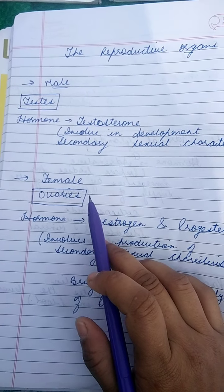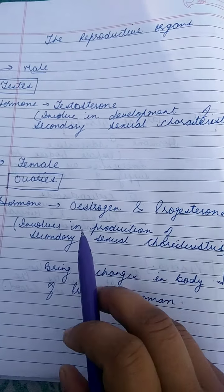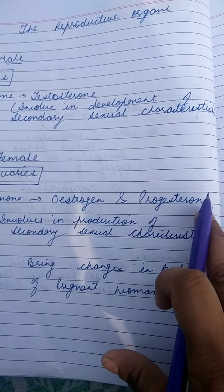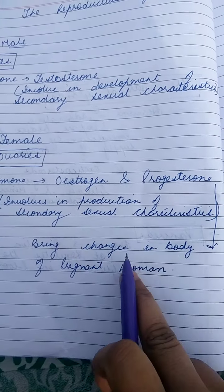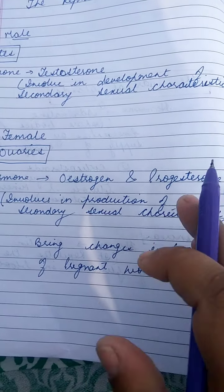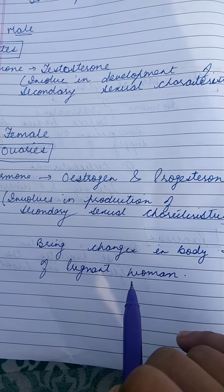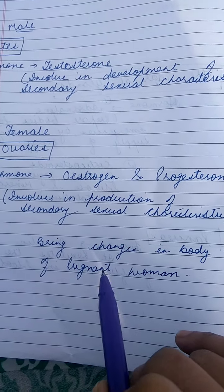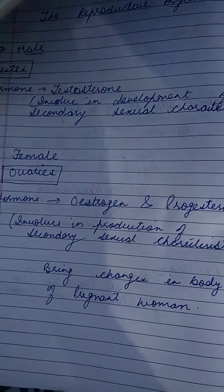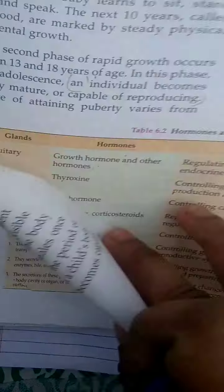Females have a pair of ovaries and they secrete estrogen and progesterone. Both are involved in the development of secondary sexual characteristics. Progesterone brings changes in the body during the pregnancy period and prepares the body for pregnancy. During and after pregnancy, secretion of milk and related processes are also controlled by progesterone. These are the endocrine glands we have discussed.